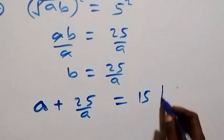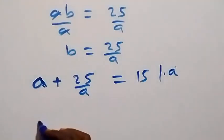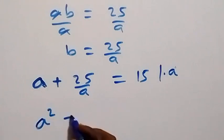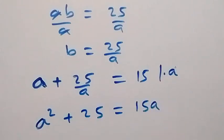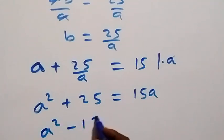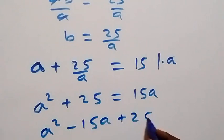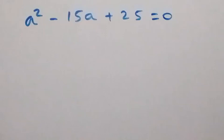Multiply through by a. The equation becomes a squared plus twenty-five equals fifteen a. Taking fifteen a to the left side and rearranging, we have a squared minus fifteen a plus twenty-five equals zero. We now have a quadratic equation.